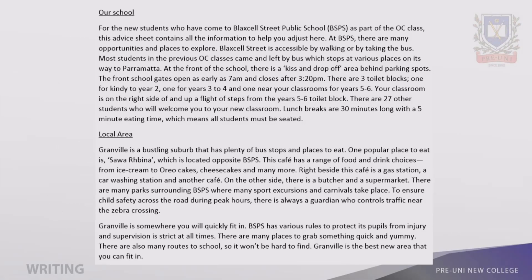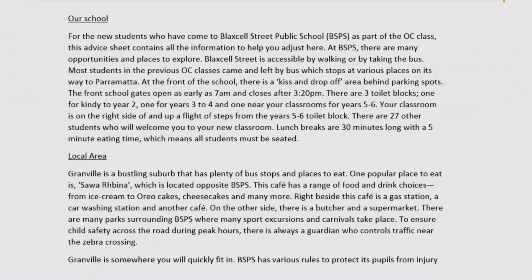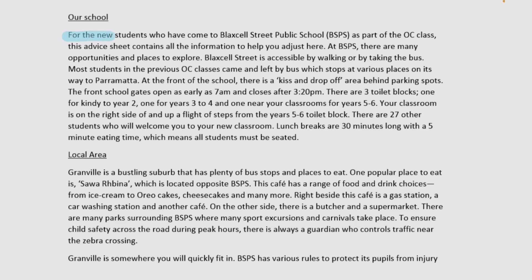This is an ideal student response. Here we will outline the key components to notice when creating your own response. The student has separated the two parts into describing the school and then describing the local area. The opening reads: 'For the new students who have come to Blacksell Street Public School as part of the OC class, this advice sheet contains all the information to help you adjust here.' In the first two lines, we can see this advice sheet is aimed at the new students, outlining what it is, who it's for, and what it aims to do.